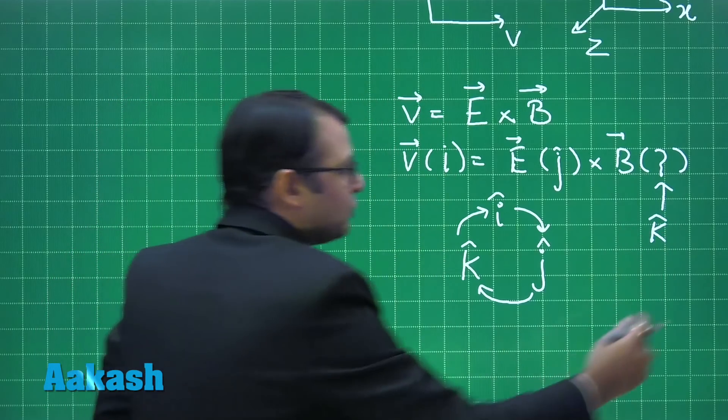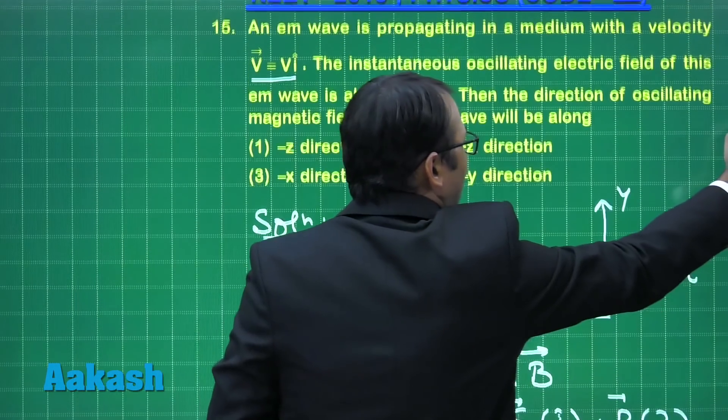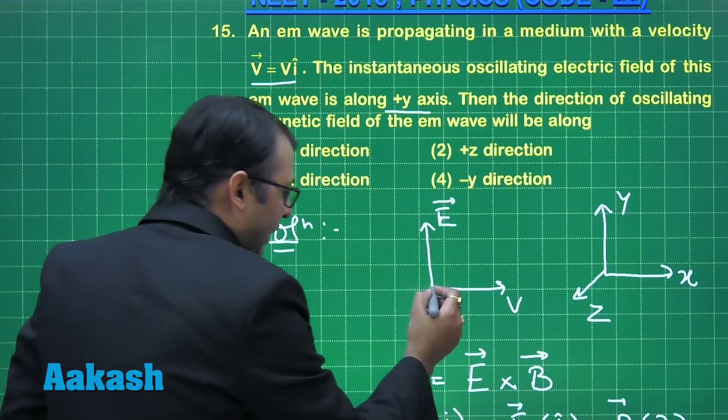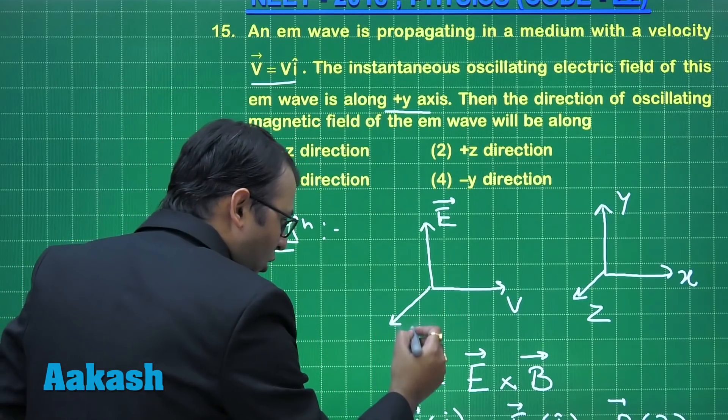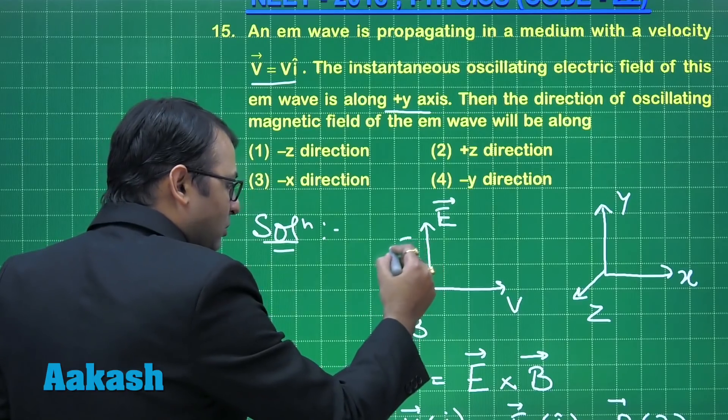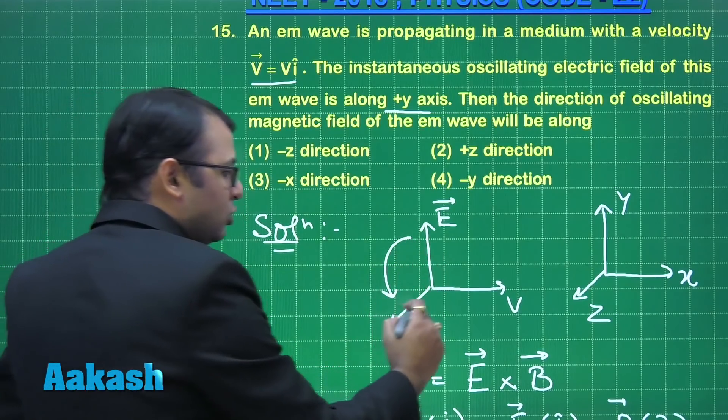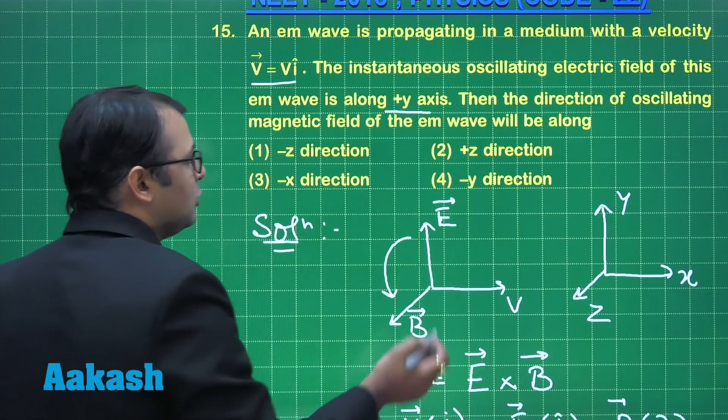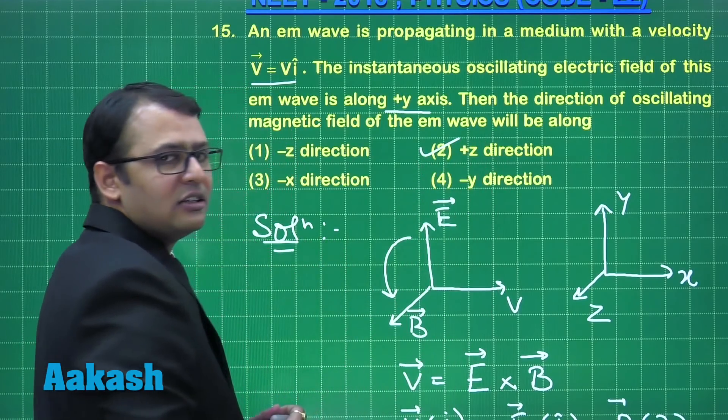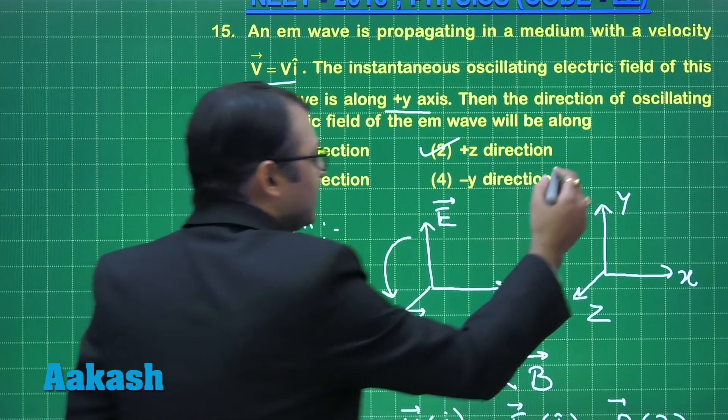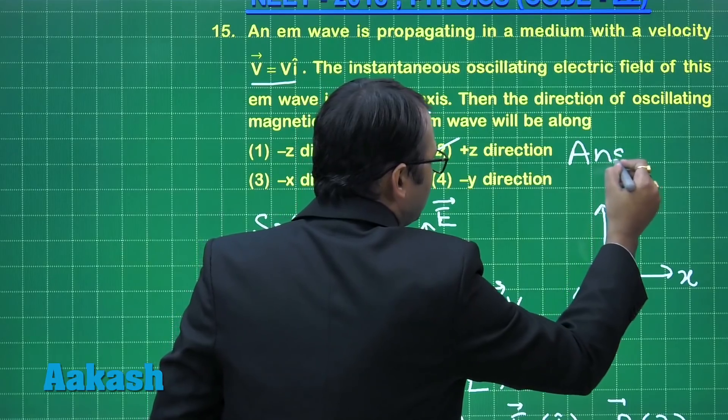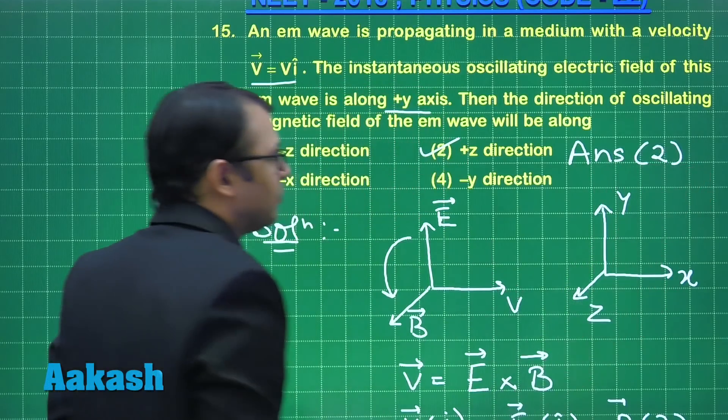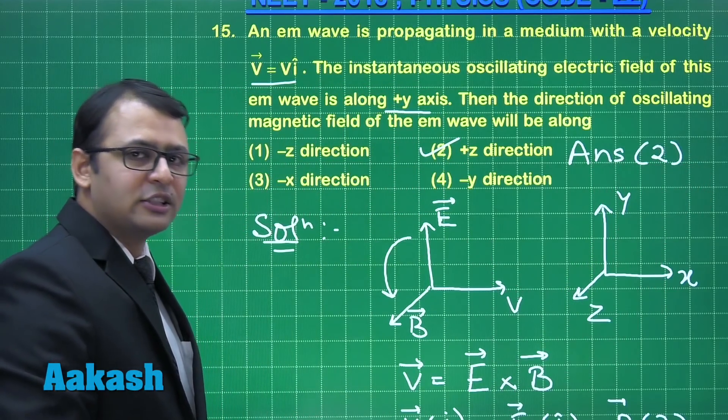So what is the final answer for this? k cap, that is along z-axis. So magnetic field should be coming along this z-axis. That is why when you cross multiply E with B you will get the velocity. So the correct answer for this is plus z direction, option number 2. Let's move forward.